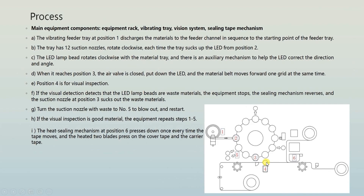But if the LED is damaged, the conveyor moves in reverse, vacuum is created again, and it takes the LED back from the conveyor. The table then rotates forward to station number five, and from there the LED is blown out of the production line — similar to the LED sorting machine process.